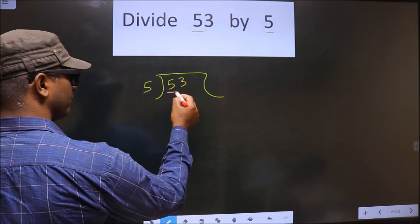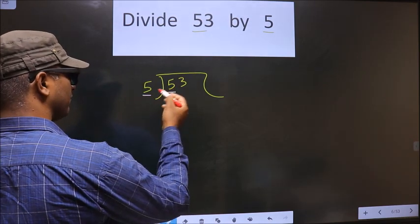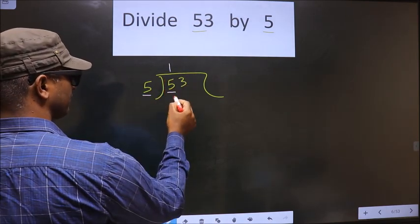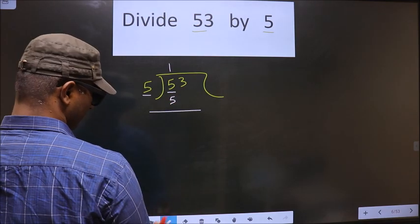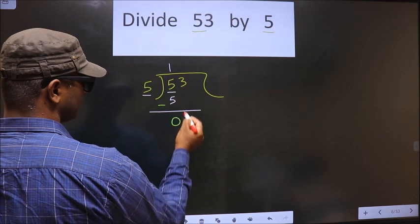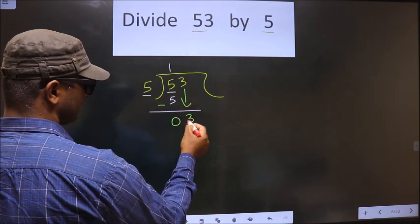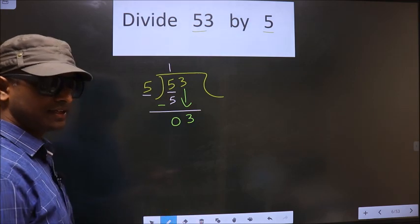Now here we have 5. Here also we have 5. When do we get 5 in 5 table? 5 once 5. So now you subtract, you get 0. Now you bring this number down, that is 3. Till here fine.